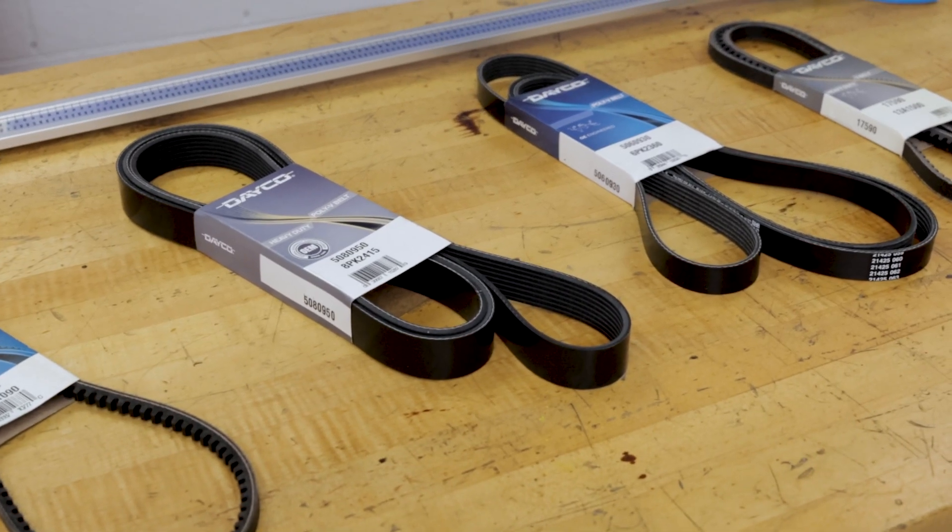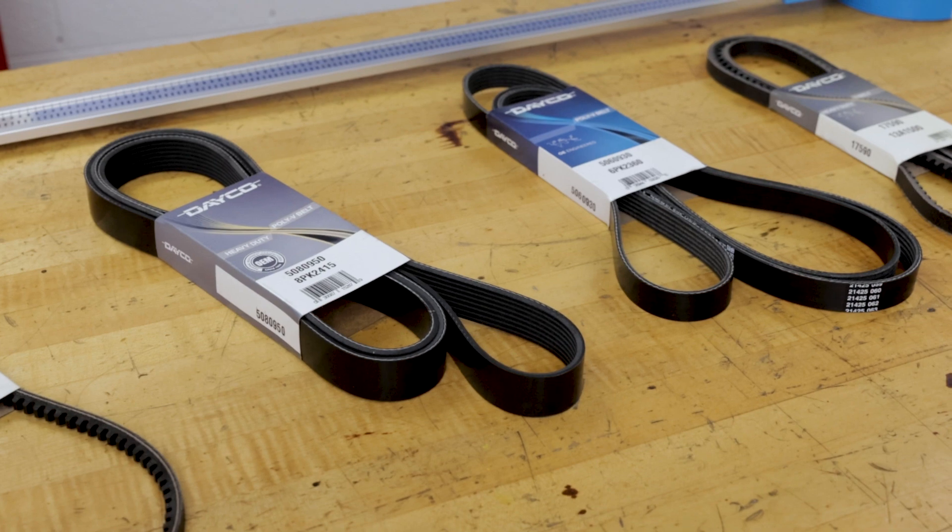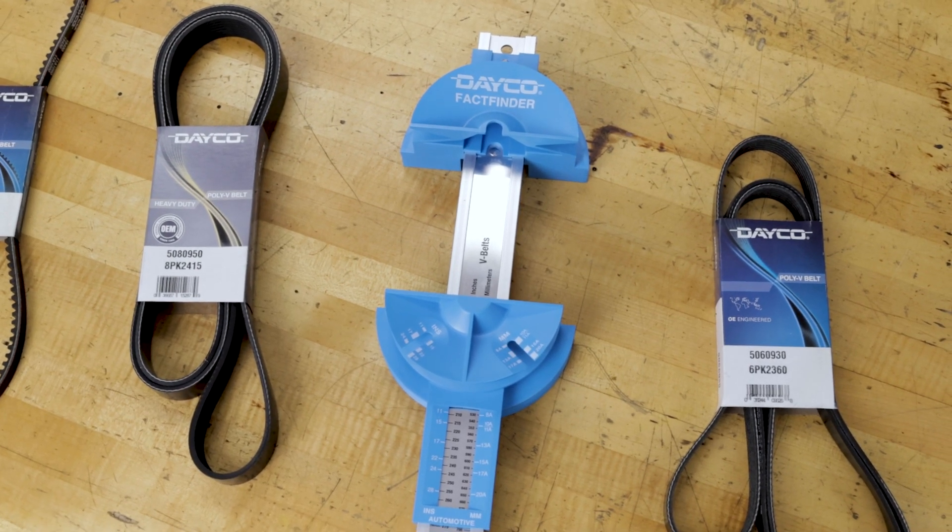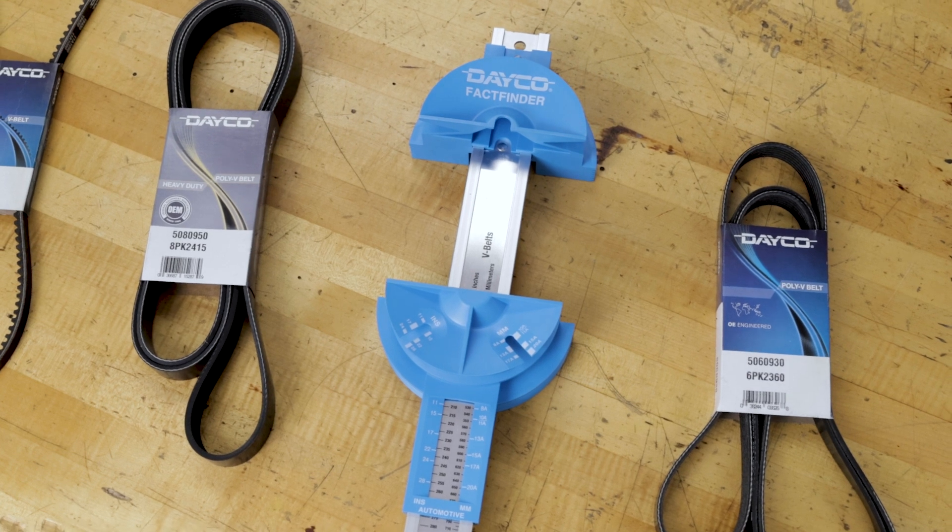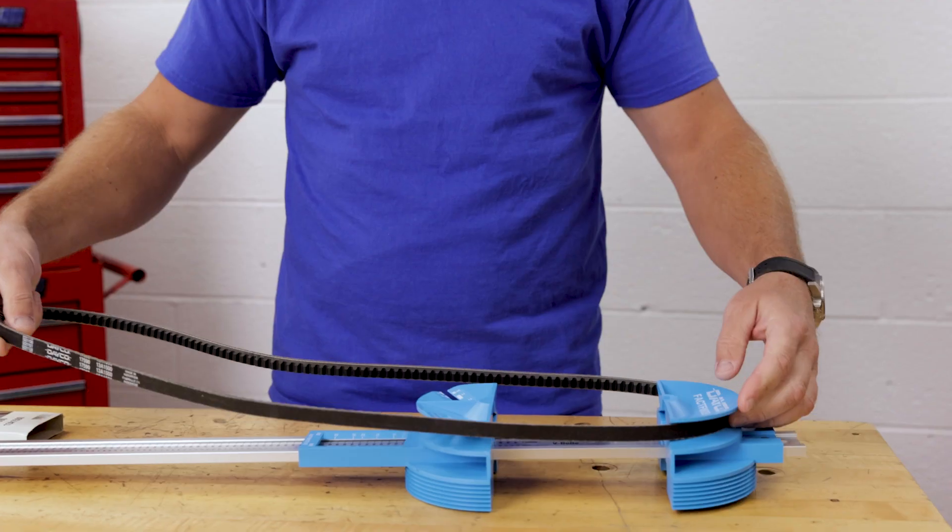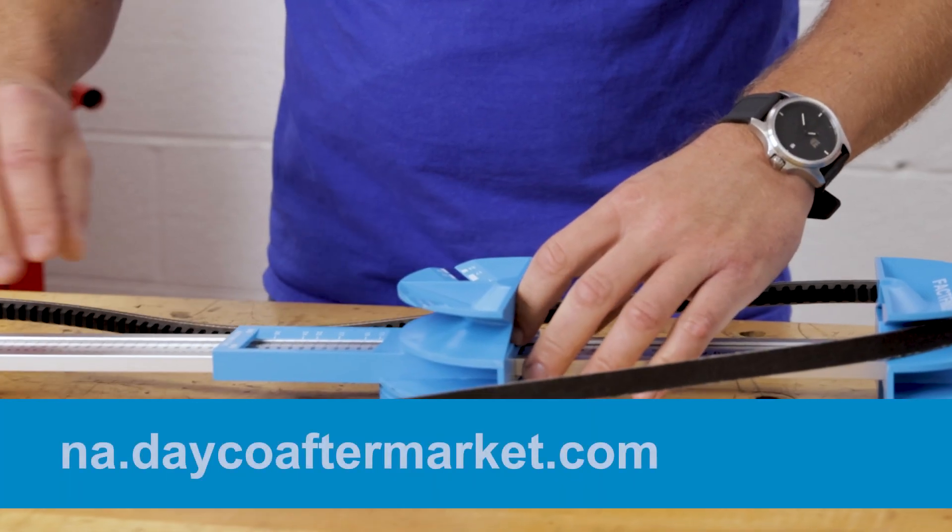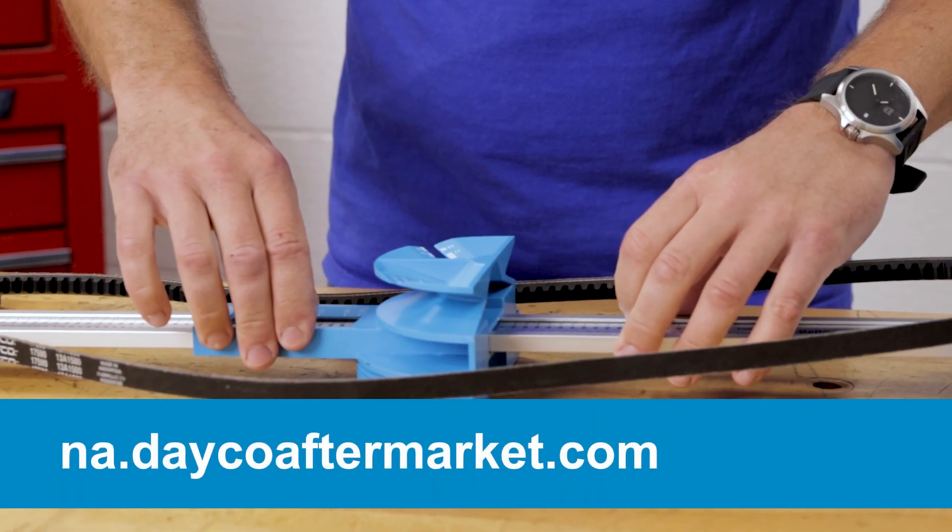It's a very accurate way to figure out what Dayco part number you need for a replacement belt. This tool can also be used for Dayco industrial belts, as well as any non-Dayco branded belt. It will allow you to pinpoint the exact length, which then can be used to find the Dayco part number by visiting the Dayco North American website.